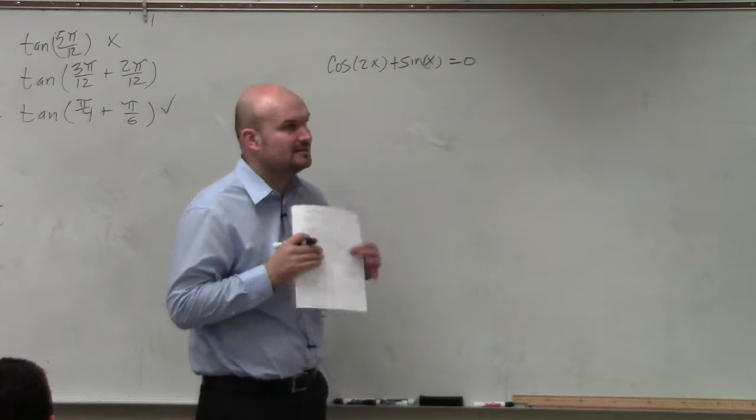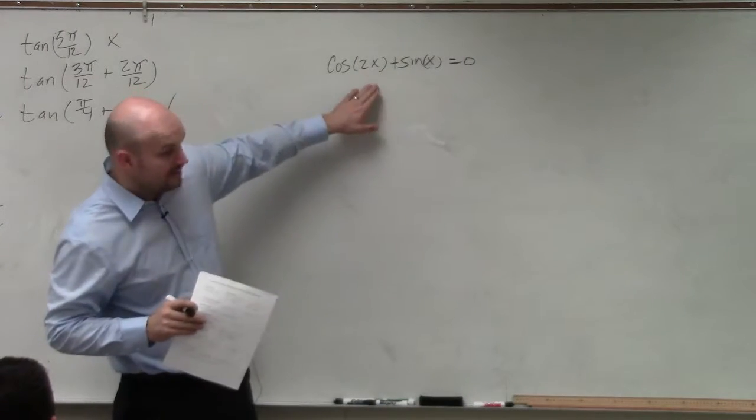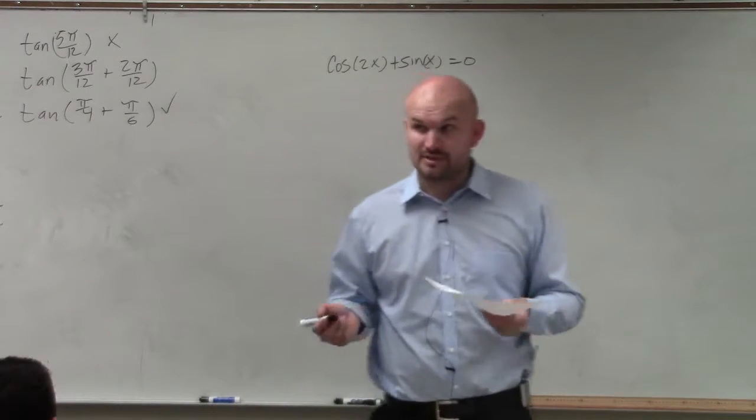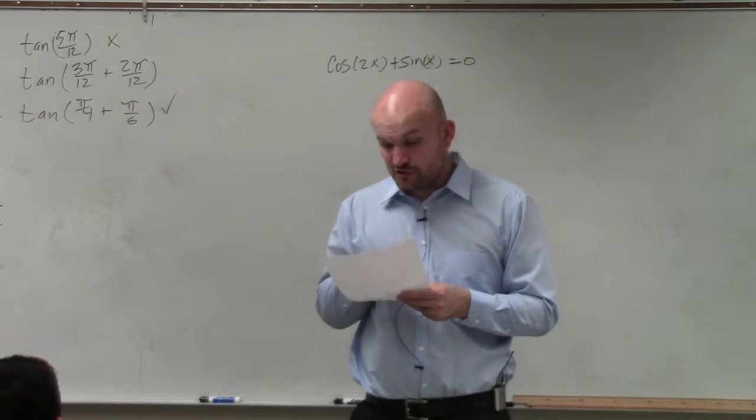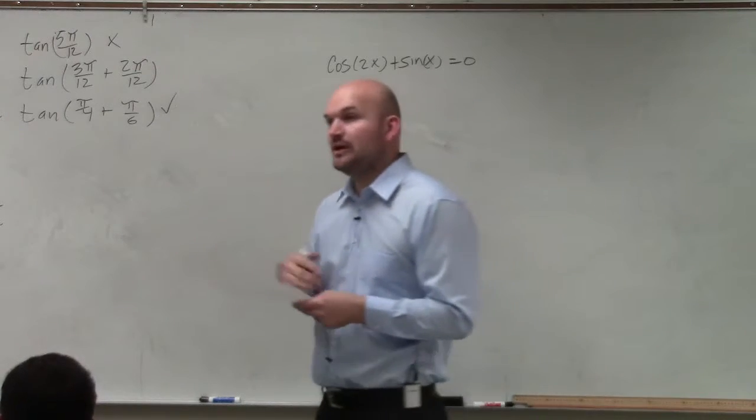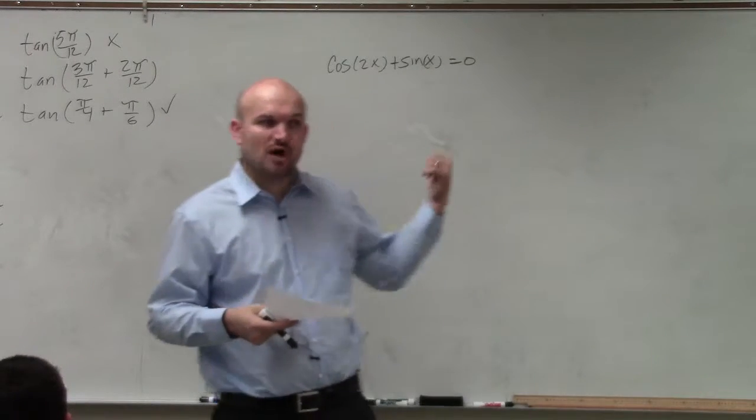So I look at my double angle formulas. I see cosine of 2x. I notice that there's three double angle formulas. Last class period I told you, basically, we're always going to want to use cosine squared minus sine squared, unless it comes into solving or an identity.